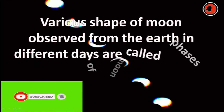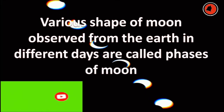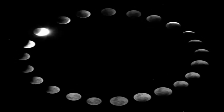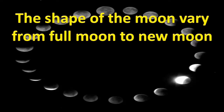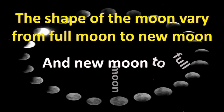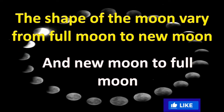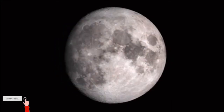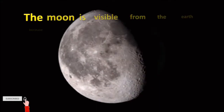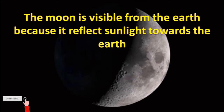Various shapes of the moon observed from the earth on different days are called phases of the moon. The shapes of the moon vary from full moon to new moon and new moon to full moon. The moon is visible from the earth because it reflects sunlight towards the earth.